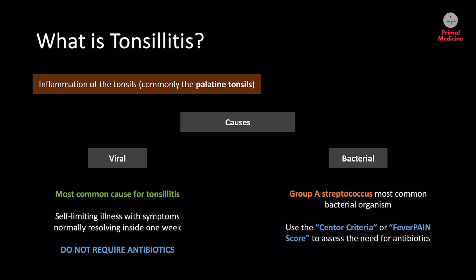Because viral tonsillitis is self-limiting, we do not use antibiotic therapy. On the other hand, bacterial tonsillitis has the most common cause being group A streptococcus, also known as streptococcus pyogenes. Another example is streptococcus pneumoniae. For bacterial tonsillitis, we need to use the Centor criteria or FeverPAIN score to determine the likelihood of bacterial tonsillitis and whether the patient will benefit from antibiotic therapy.